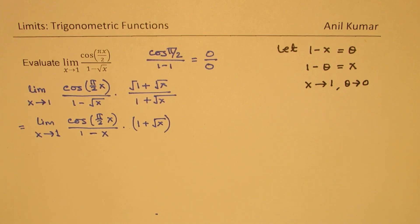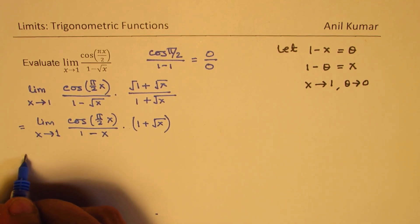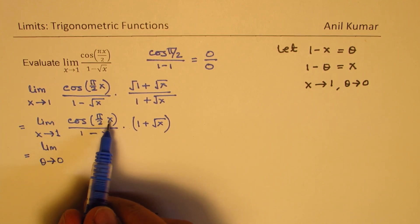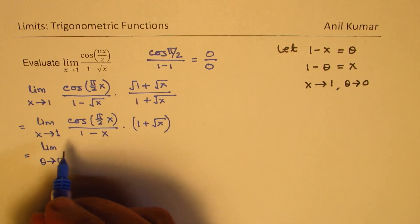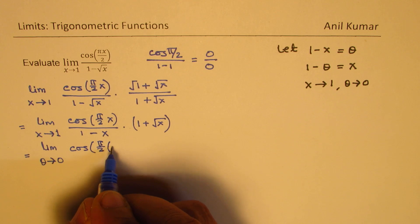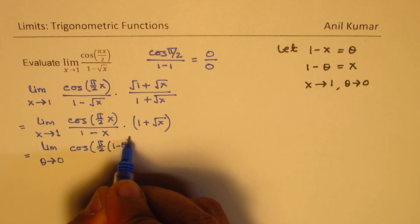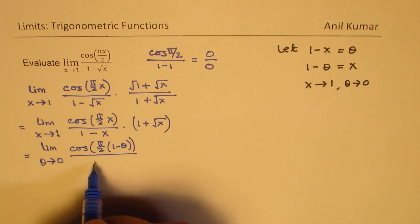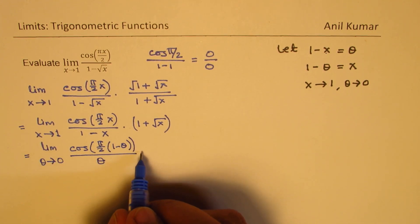Using this substitution, we could rewrite this question as limit theta approaches 0. Replacing x with 1 minus theta, we get cos(π/2 times (1-θ)) over theta times...